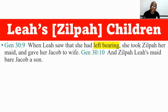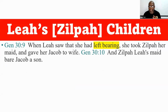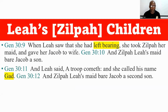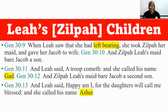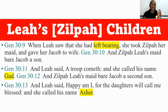When Leah saw that she had stopped having children — she's now at four and Rachel's at two — she said, 'Okay, no problem Rachel. Let's play your game.' So she took Zilpah her maid and gave her to Jacob for his wife. And Zilpah, Leah's maid, bore Jacob a son. And Leah said, 'A troop cometh,' and she called his name Gad. And Zilpah bore Jacob a second son, and Leah said, 'Happy am I, for the daughters will call me blessed,' and she called his name Asher. You notice how meanings are applied to names based on their circumstances and what they wanted to portray.